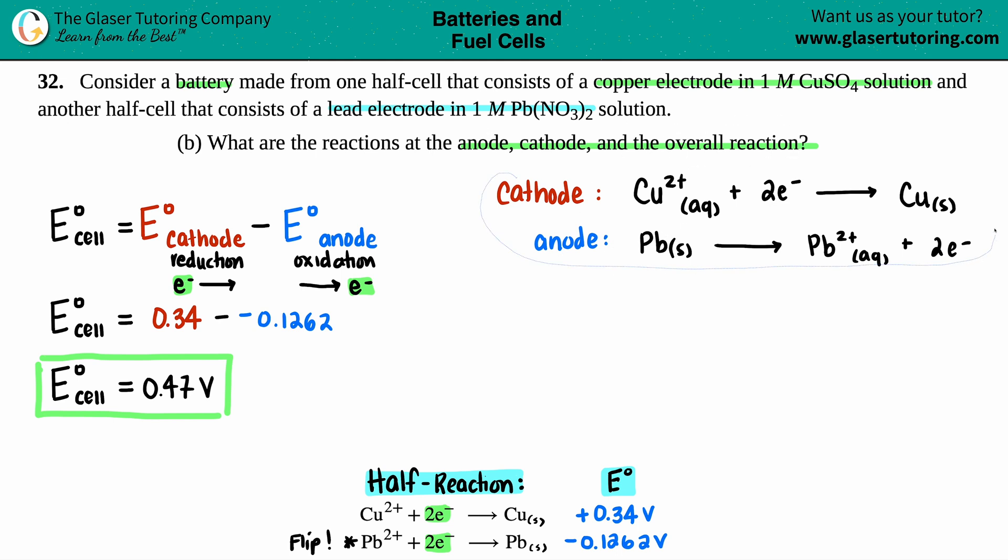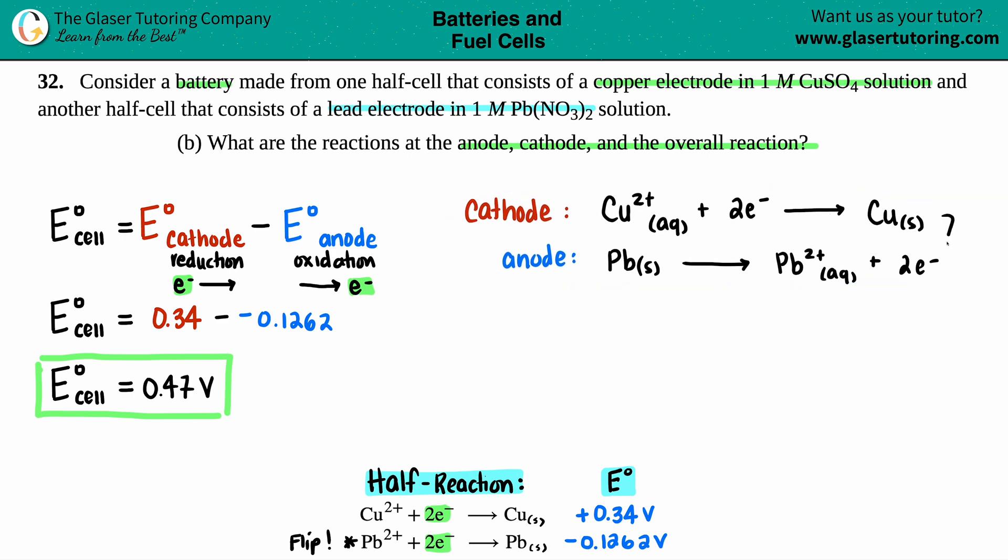Well, the overall reaction is when you add these two half reactions together, hoping that you have the same number of electrons. You could only cancel them out if you have the same number. And in this case, we already do have the same number of electrons. Two. So I can just go for it and add these up because those same number of electrons, the two electrons, are going to cancel. And then anything that stays on the left side is going to stay on the left side. Anything on the right side of the yield sign stays on the right side.